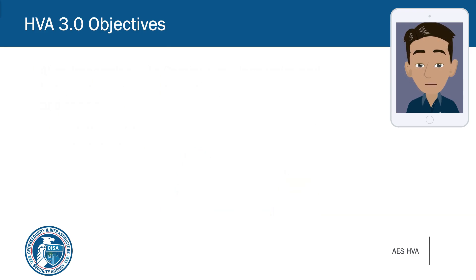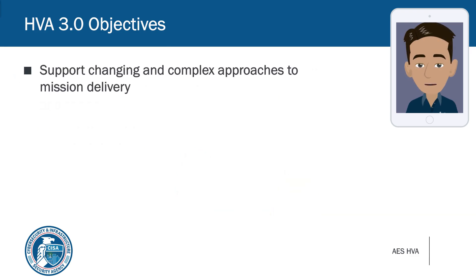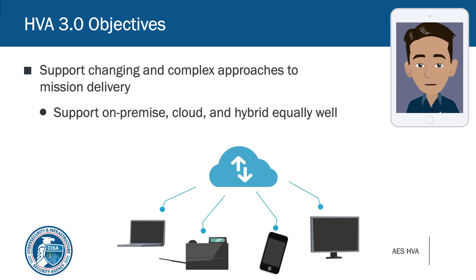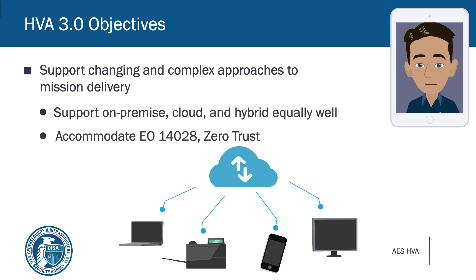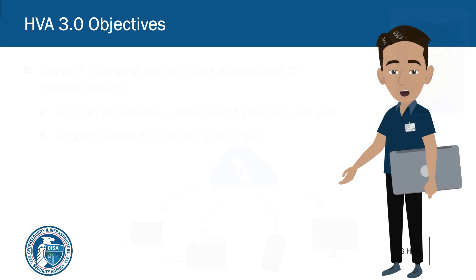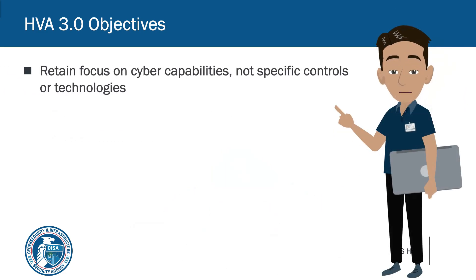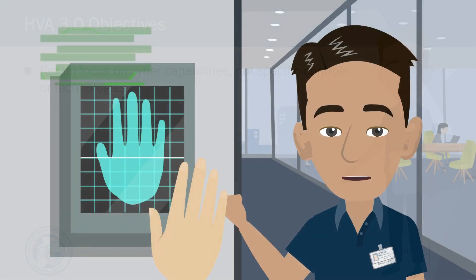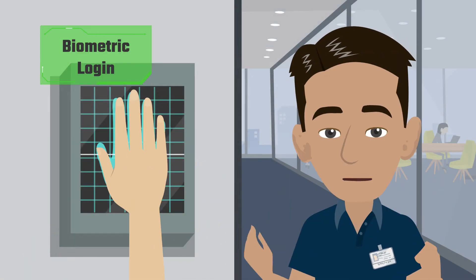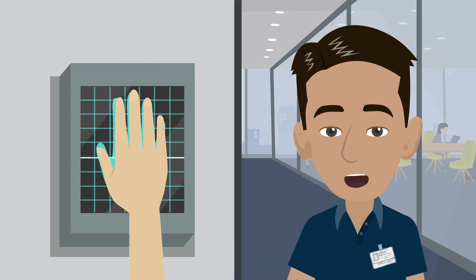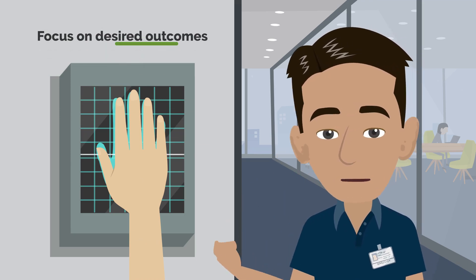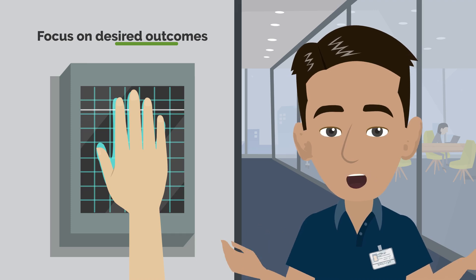In addition, CISA wanted to support the ever-changing landscape of cybersecurity and the different ways that HVAs are developed, hosted, and maintained. CISA developed HVA 3.0 with on-premises, cloud, and hybrid systems in mind, and considered emerging approaches such as zero-trust. Finally, HVA 3.0 remains focused on cyber capabilities rather than on specific controls. Technology changes at a rapid pace, so to keep the HVA assessment relevant, it must focus on the desired outcomes rather than on technical approaches that may be outdated in the future.